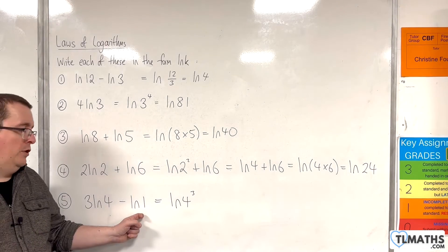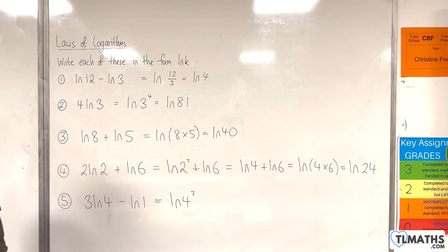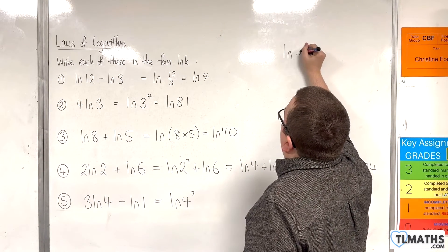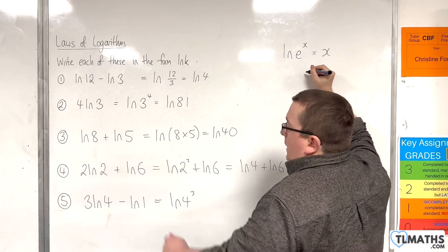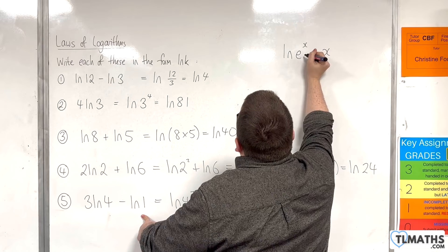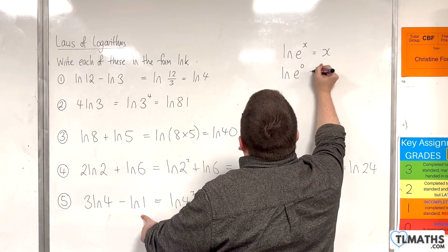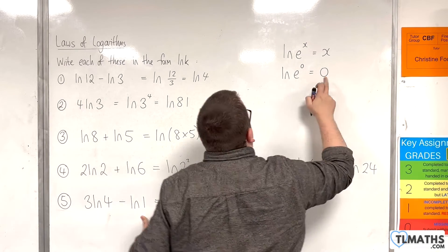Now natural log of 1 is 0. The reason for that is remember that the natural log of e to the x is x. So here we've got 1, so e to the x would have to be 1, and that's going to happen when x is 0. So you have the natural log of e to the 0 is equal to 0. So natural log of 1 must be 0.